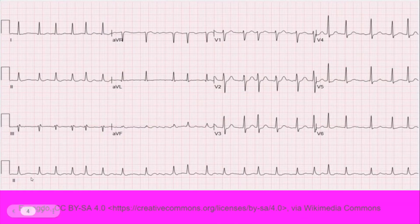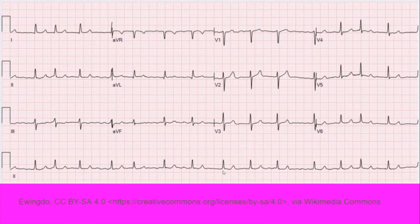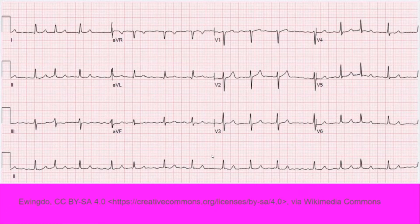Here's another example. There are no clear P waves, and the distance between the QRS complexes, or each contraction, is not regular — it changes beat to beat. And here is one more example: no clear P waves, and the distance is changing every single time from QRS to QRS, so the contractions from the ventricles are not regular.